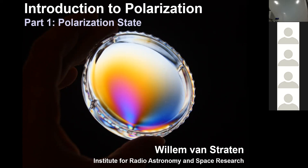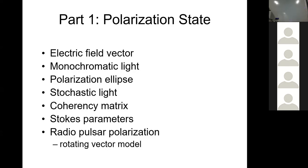I wasn't sure at first how many will be coming from a physics background — some people from computer science and mathematics — so I thought I'd give you just a little bit of physics as well. We're going to start with this idea of an electric field vector and consider first a case of monochromatic light. With monochromatic light it's by definition 100% polarized and you can draw this nice neat polarization ellipse. Then we'll switch to thinking about noise or partially polarized light — a stochastic light — and how to describe polarization using the coherency matrix and the Stokes parameters.